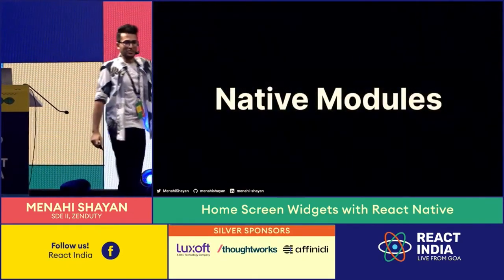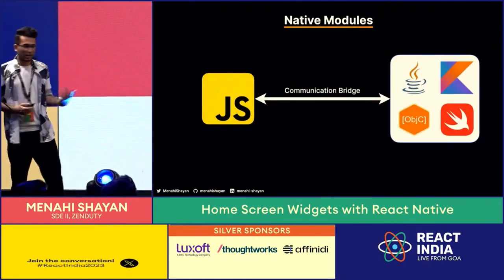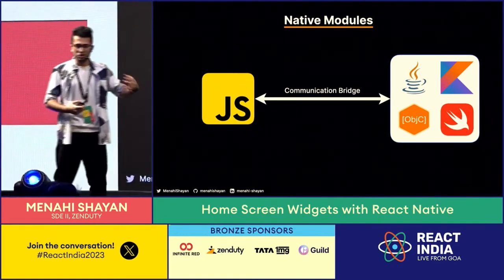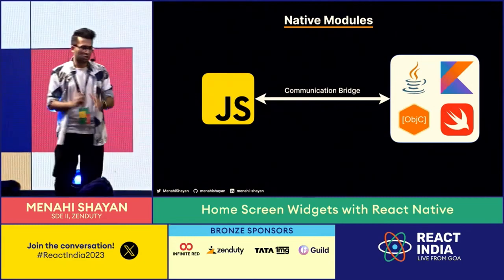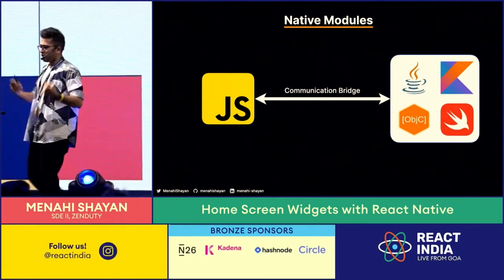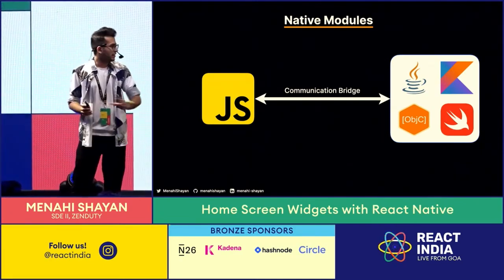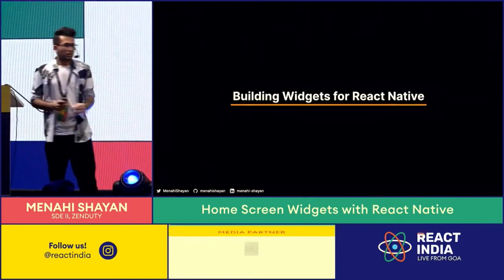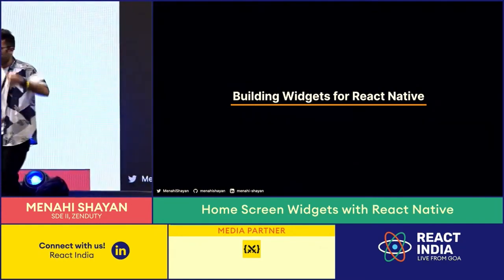Native modules are a feature of React Native. They act as a communication bridge between your JS code and the underlying iOS and Android code. So you can write whatever you want and connect to the native iOS and Android APIs that don't currently exist in React Native, and access them through JavaScript. So we're back on track — how do we build React Native widgets using native modules?